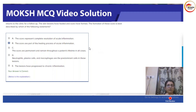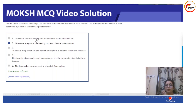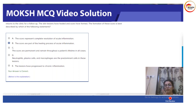The first option states that scars represent complete resolution of acute inflammation — this is not true. Complete resolution of acute inflammation is basically normal skin. When the skin returns to normal, that is when we call it complete resolution.